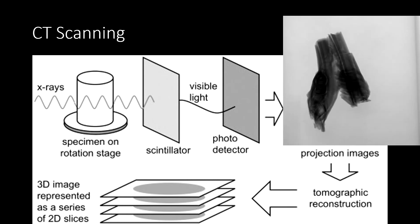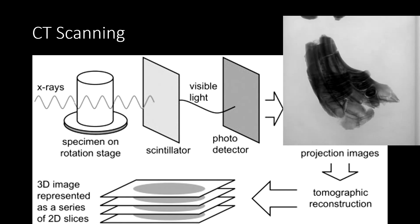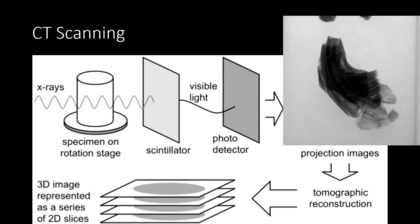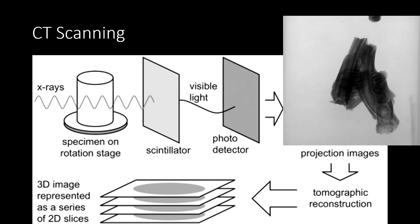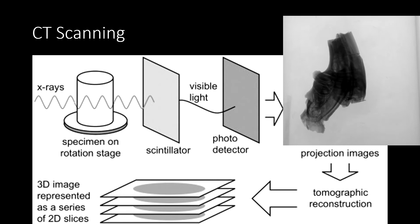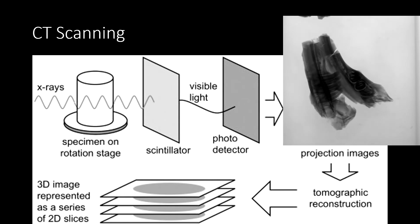An example of this raw data can be seen on the right. You can see how even though each of these slices only shows a single view of the object, when you combine all of them together, you can get a really good idea of the internal and external morphology of this rodent jaw.